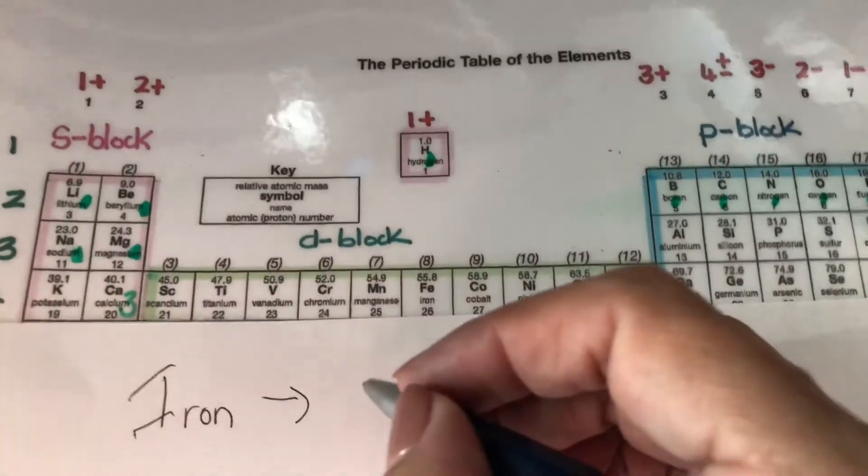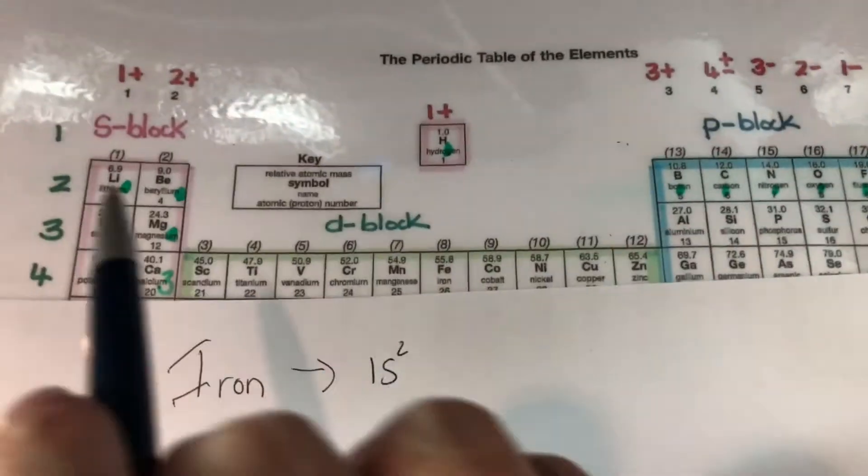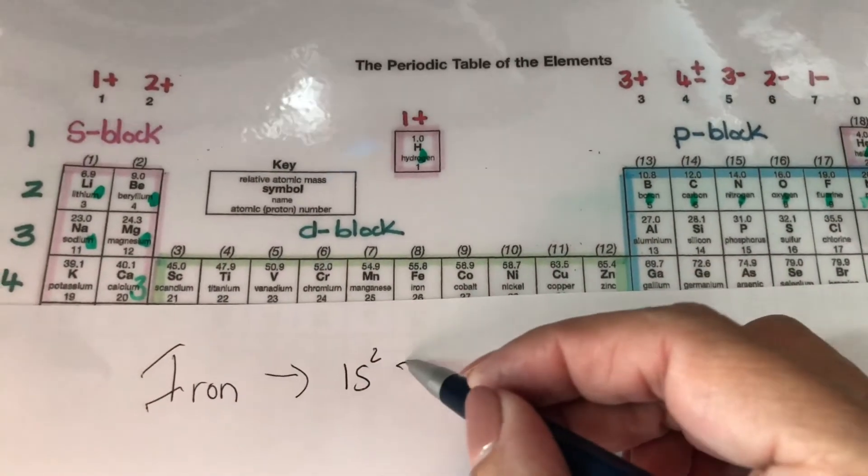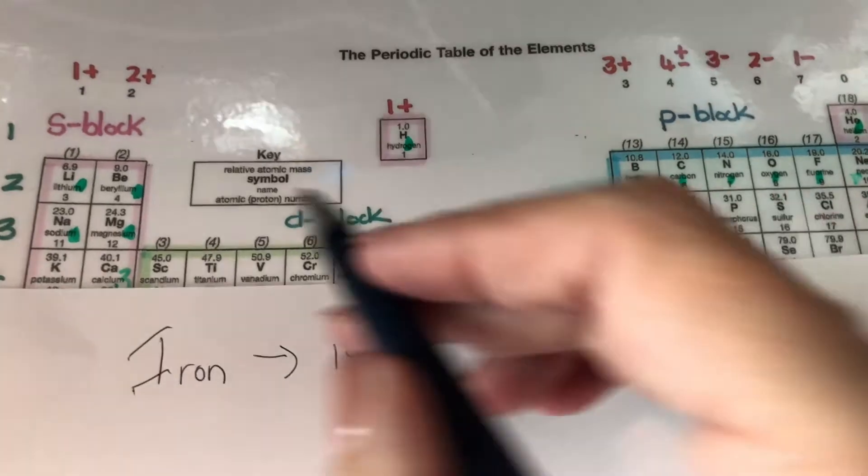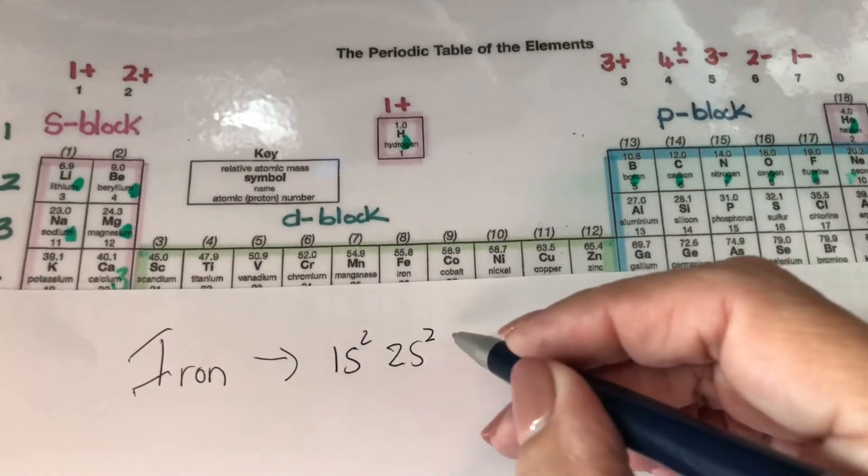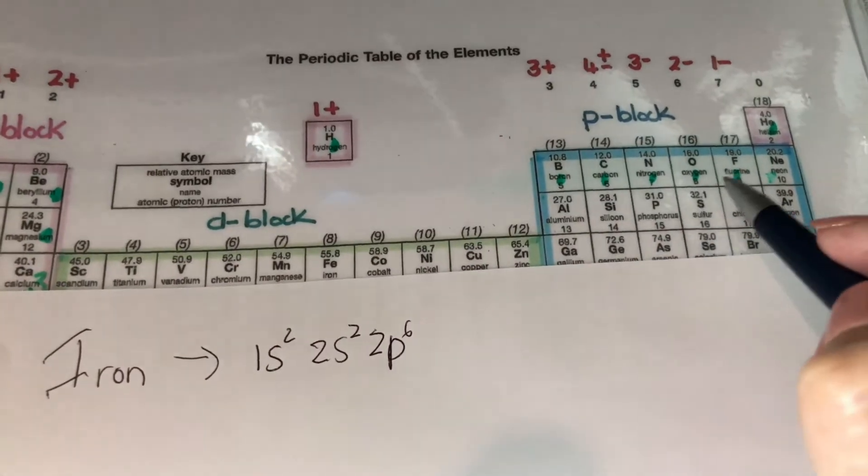So that would be 1S2. 1, 2. 2S. 1, 2. Then 2P6. 1, 2, 3, 4, 5, 6.